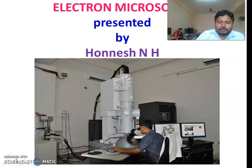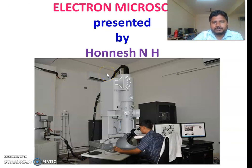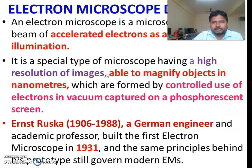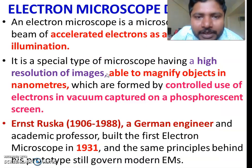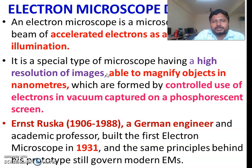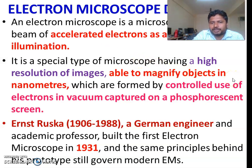Electron Microscope, presented by OneNationH. An electron microscope is a microscope that uses a beam of accelerated electrons as a source of illumination. It is a special type of microscope having a high resolution of images, able to magnify objects in nanometers, which are formed by the controlled use of electrons in vacuum, captured on a fluorescent screen.